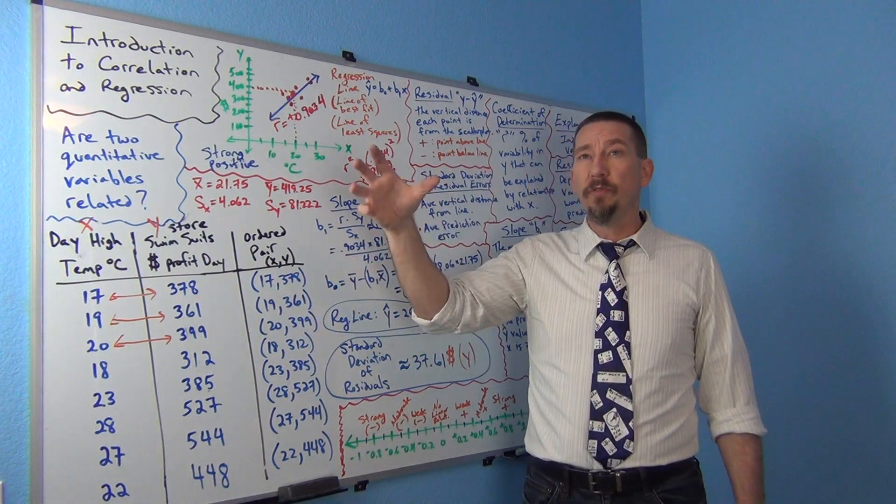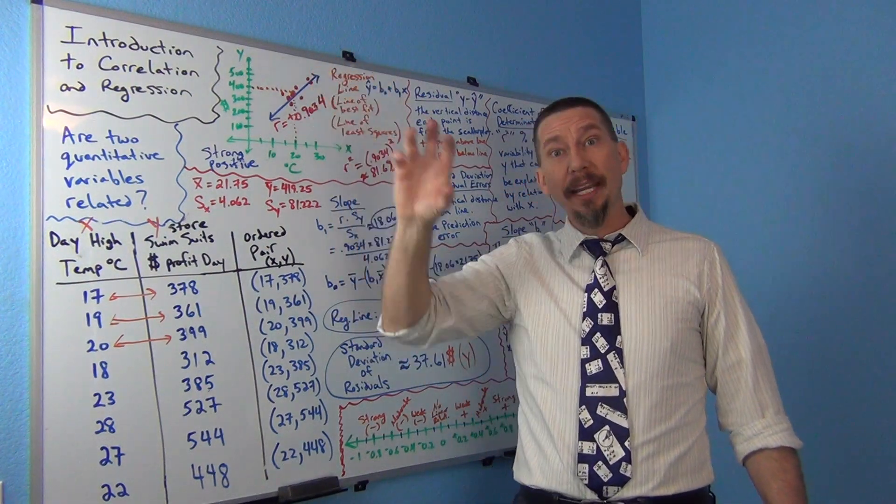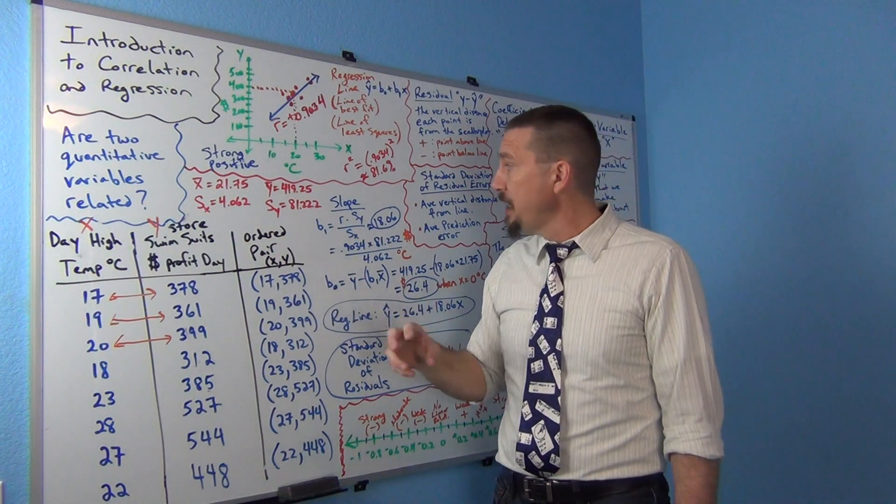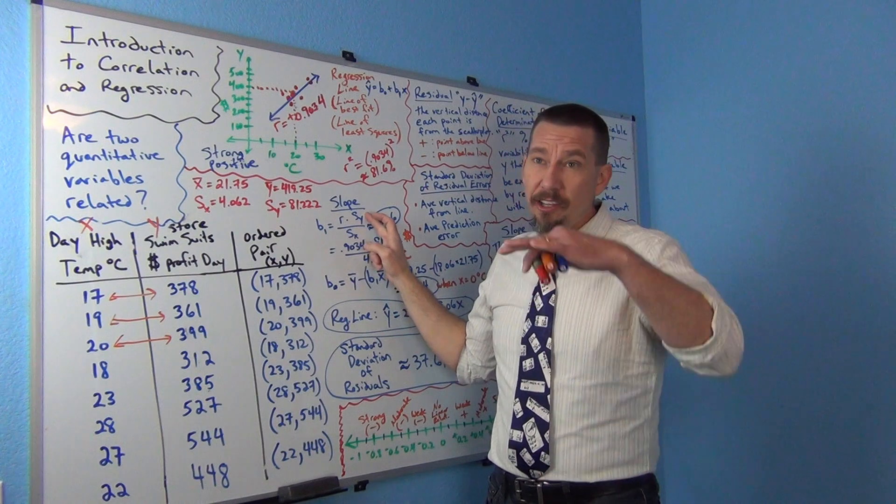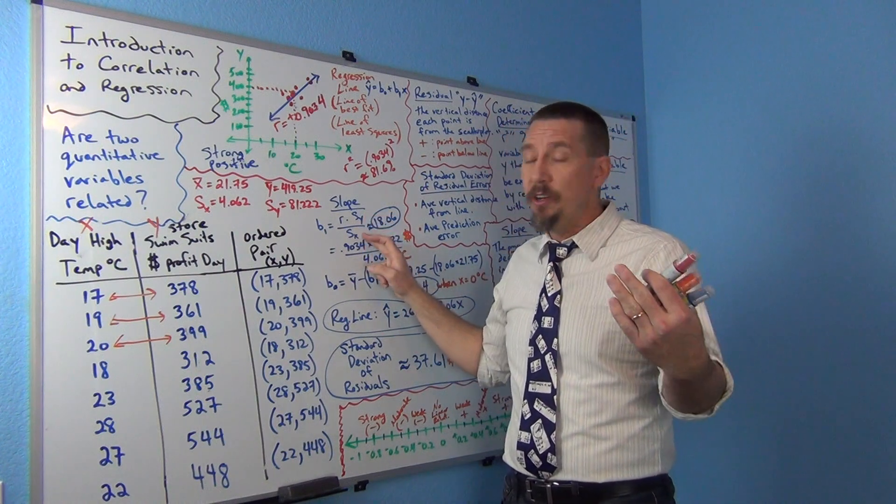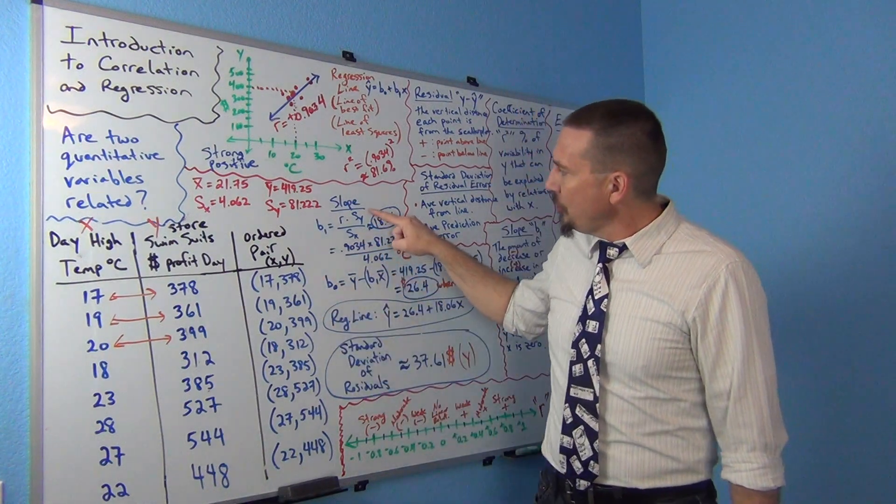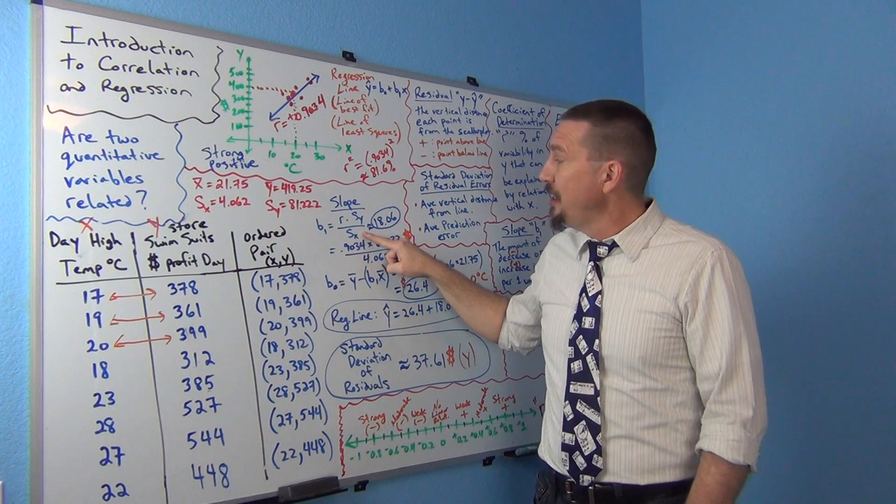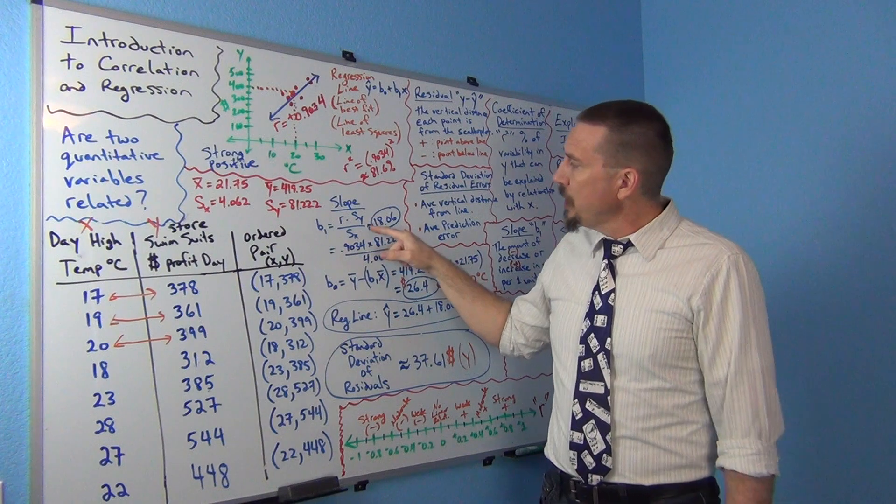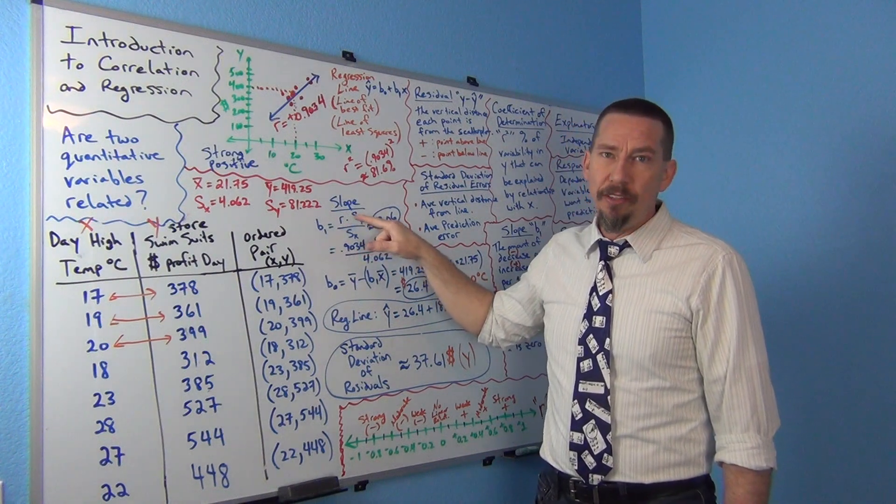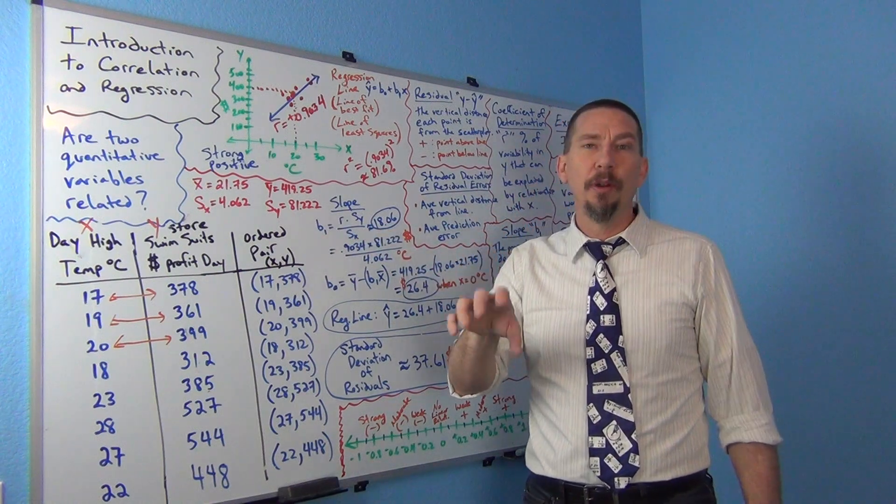So the formula for slope is r times the standard deviation of y divided by the standard deviation of x. So if you think about, remember your old formula of slope, maybe in an algebra class, was rise over run, right? Change in y divided by change in x. Same idea. But now we're using the standard deviation of y, which is the change, kind of the change in y or the variability in y divided by the variability in x. But it turns out standard deviation is always positive. So if all you did was standard deviation divided by standard deviation, you'd actually always get a positive slope even if the line was going down. So the actual missing component is this r value.